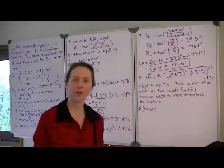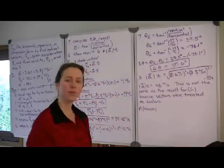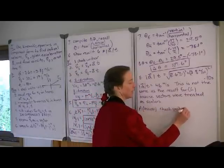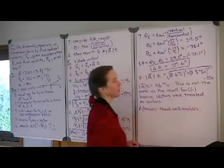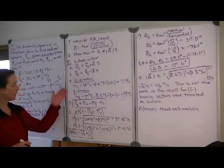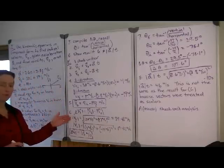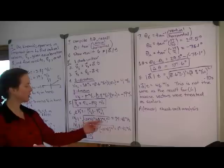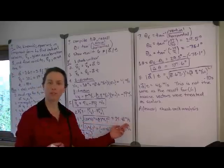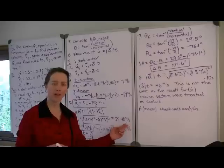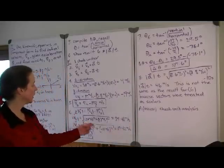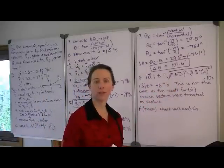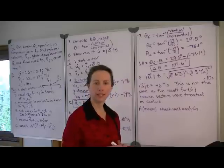As we assess our answer, there are a couple of things we can do to build confidence. First, we want to check unit analysis. We already checked that we're in MKS units, and as we went along — for example, in our calculations for the magnitude of the velocity vector — we included units of meters per second. When each value is squared and the square root is taken, we end up with units of meters per second for a speed, which is what we expect. Including units along the way protects us from substituting incorrect values.